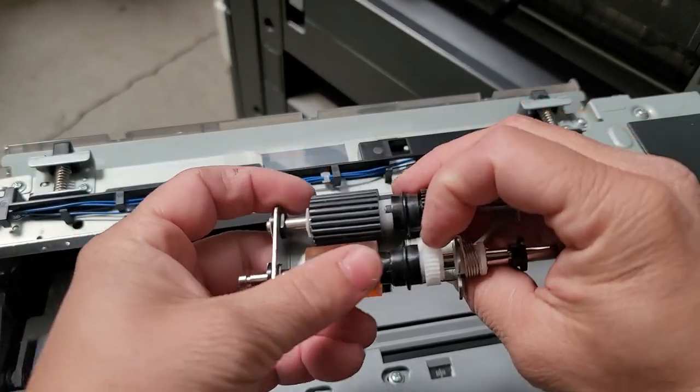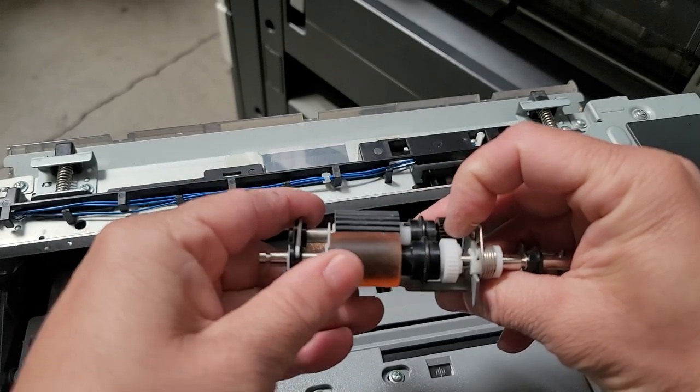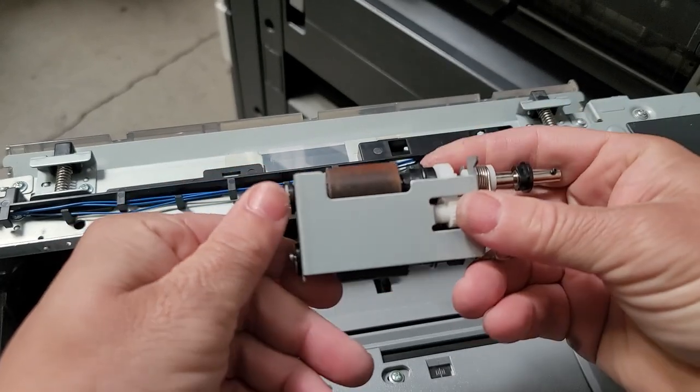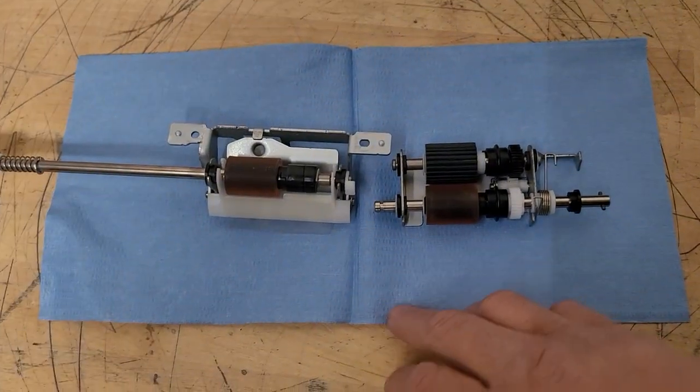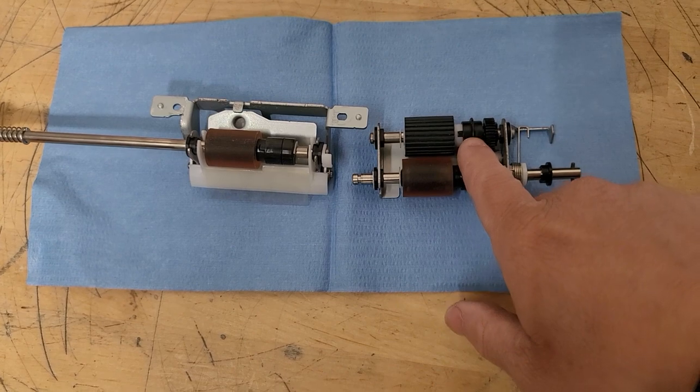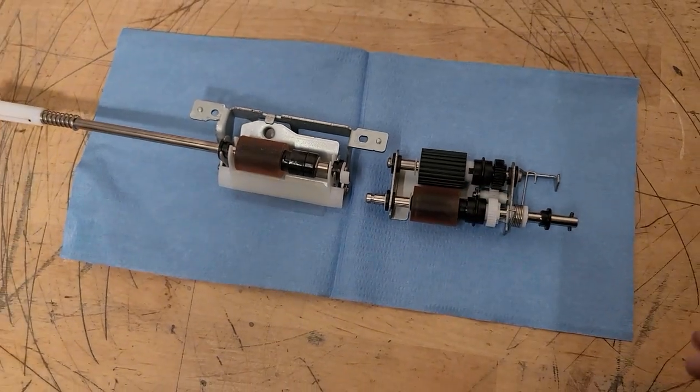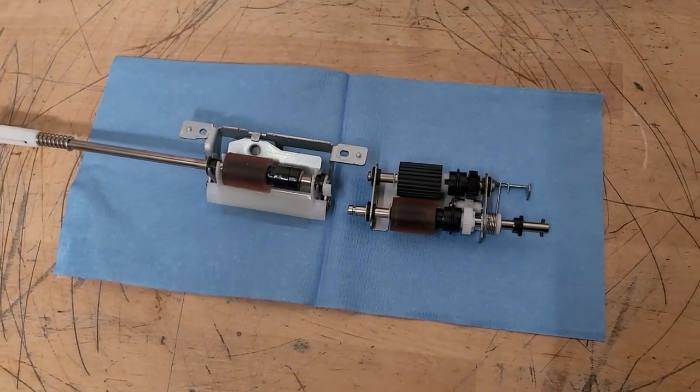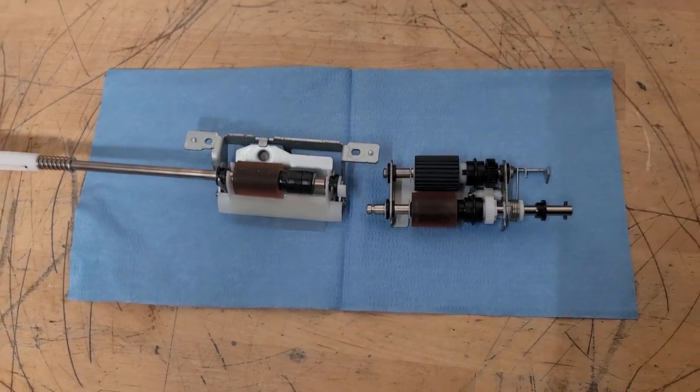Now let's get these looked at. And yeah, those are flat bald, so we're going to go ahead and change these. All right, so we're going to go ahead and replace the feed rollers and separation rollers along with their little one-ways here, just so we got a nice full set of everything, and then we'll test it out and make sure it works.